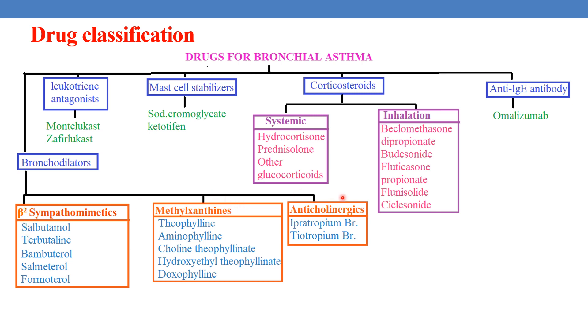Methylxanthines and anticholinergics. Examples of beta-2 sympathomimetics are salbutamol, terbutaline, bambuterol, salmeterol, and formoterol.